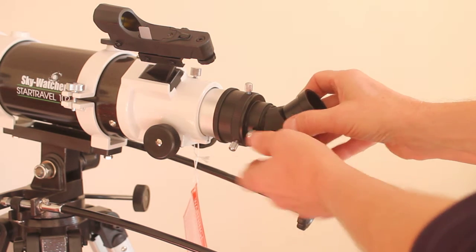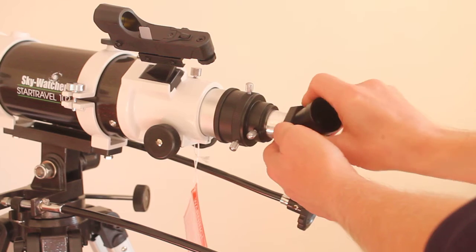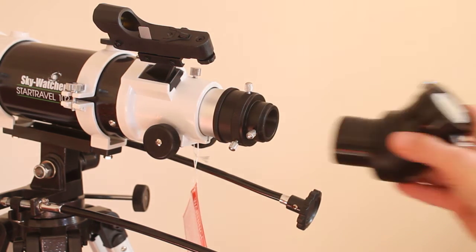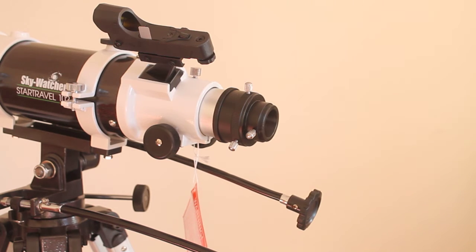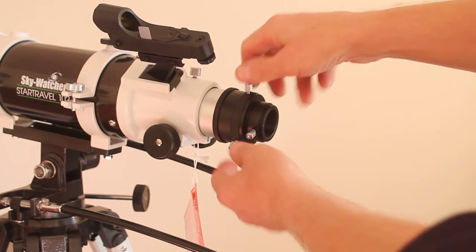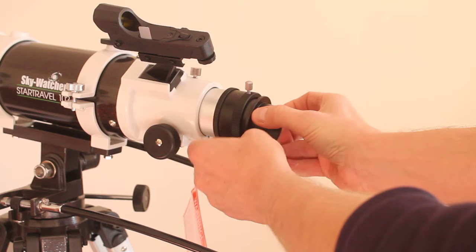So then you get your 2-inch diagonal. It's not going on, so all you do is - not that one - these two here, these grub screws, slacken them off. And that now means you can put in the 2-inch diagonal.